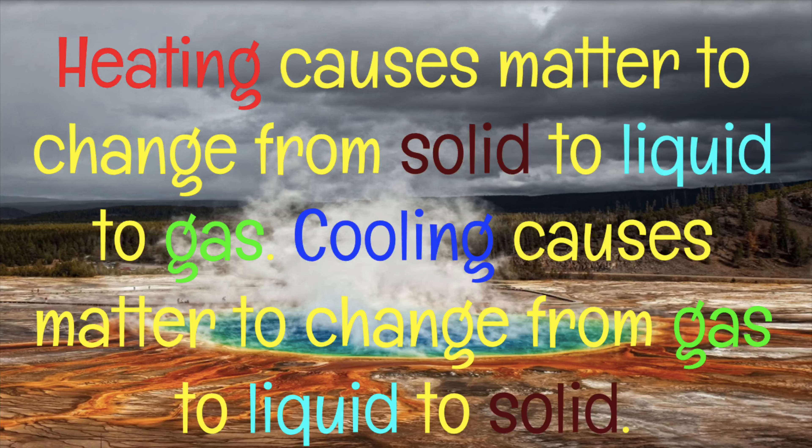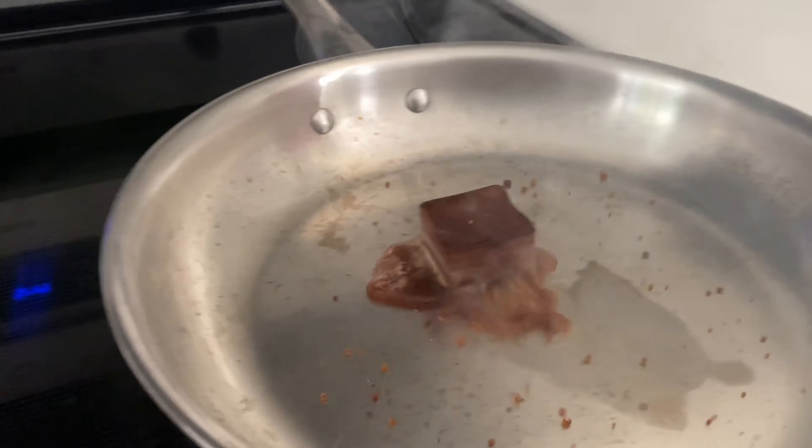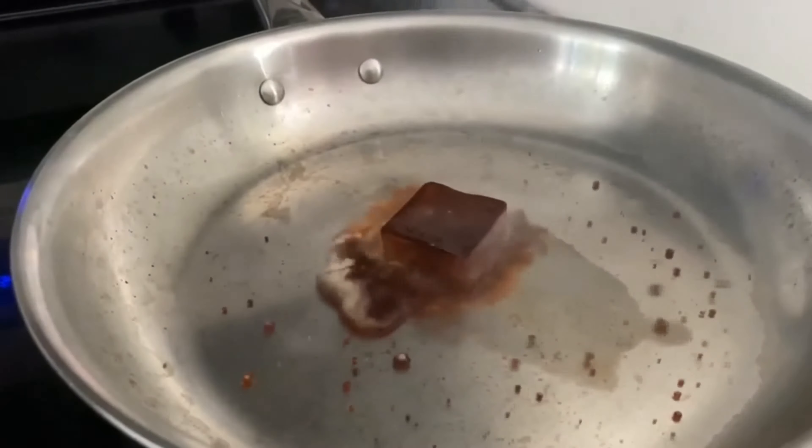Heating causes matter to change from solid to liquid to gas. Cooling causes matter to change from gas to liquid to solid. So what does it mean to change state? If we add enough heat, we can turn solids into liquids, and liquids into gases. But if we take enough heat away, we can turn gases into liquids and liquids into solids.